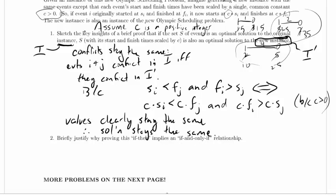So what's the if-then we proved? If the set S of events is an optimal solution to the original instance, S with its start and finish time scaled by C is also an optimal solution to the new instance.